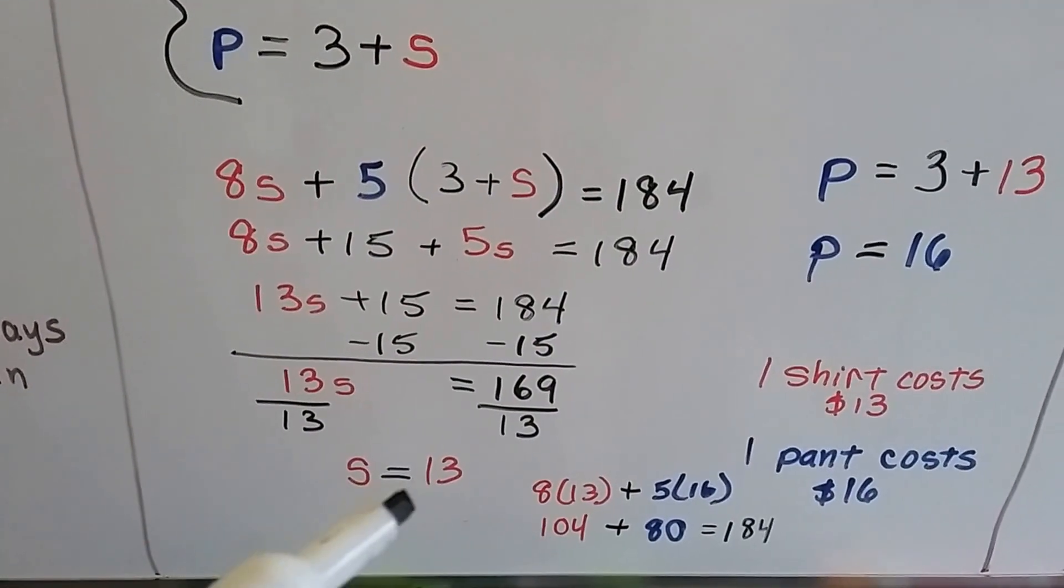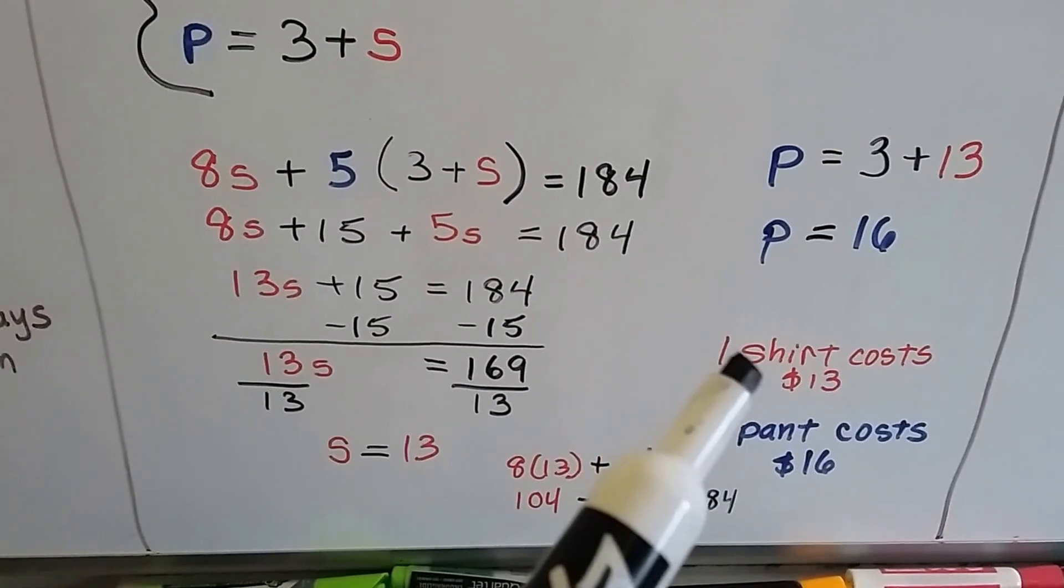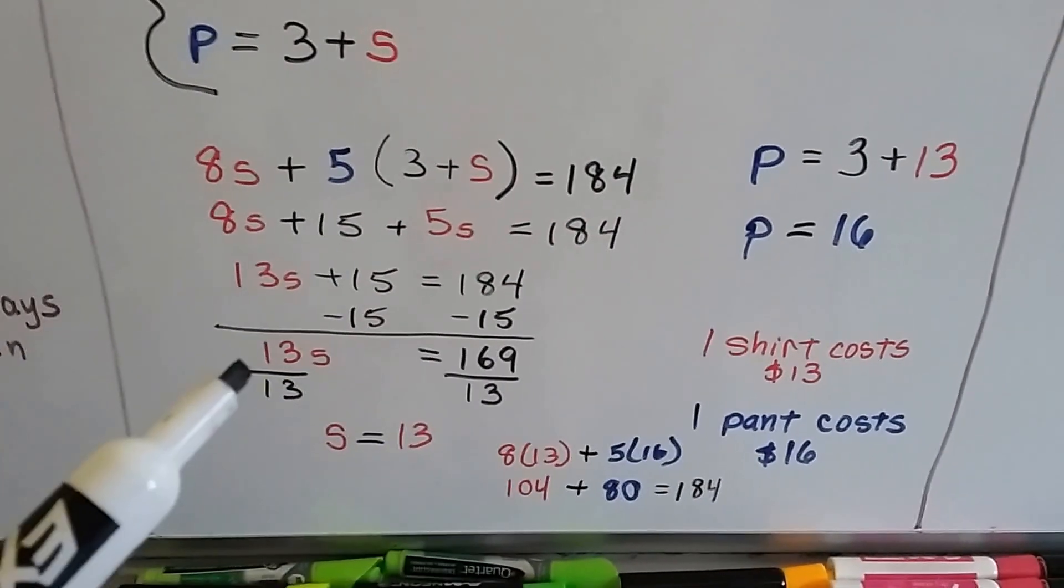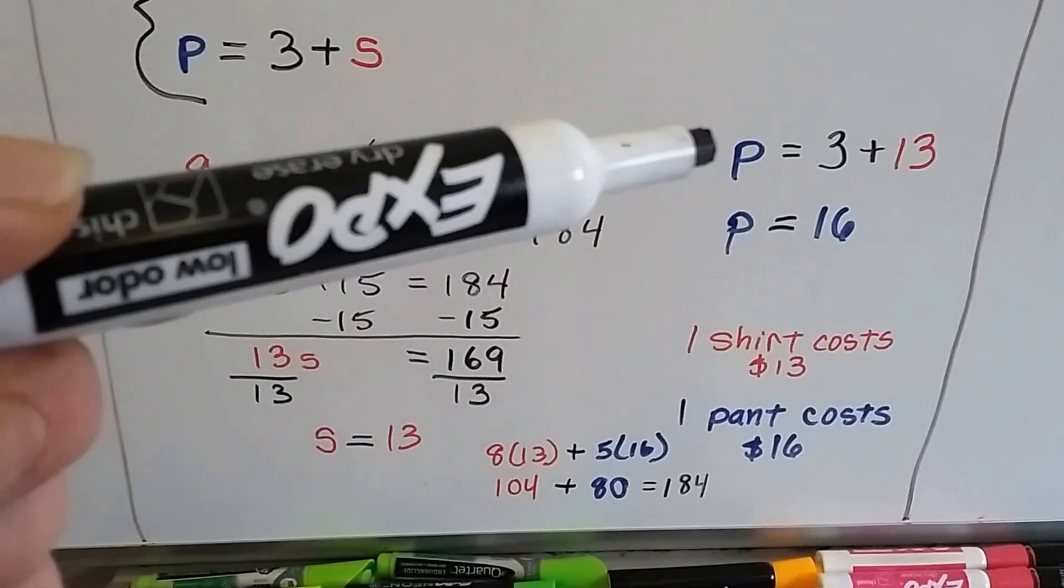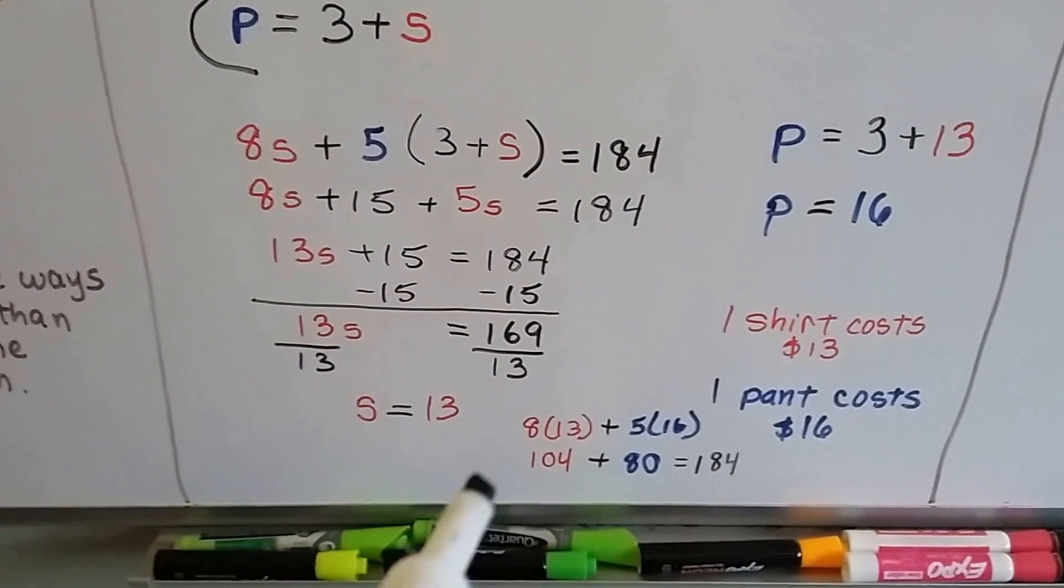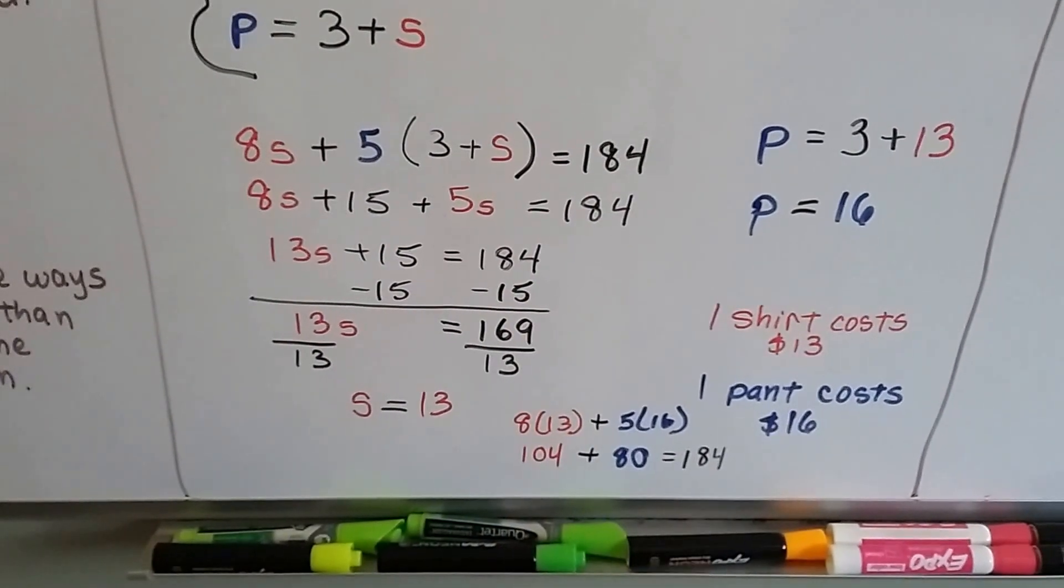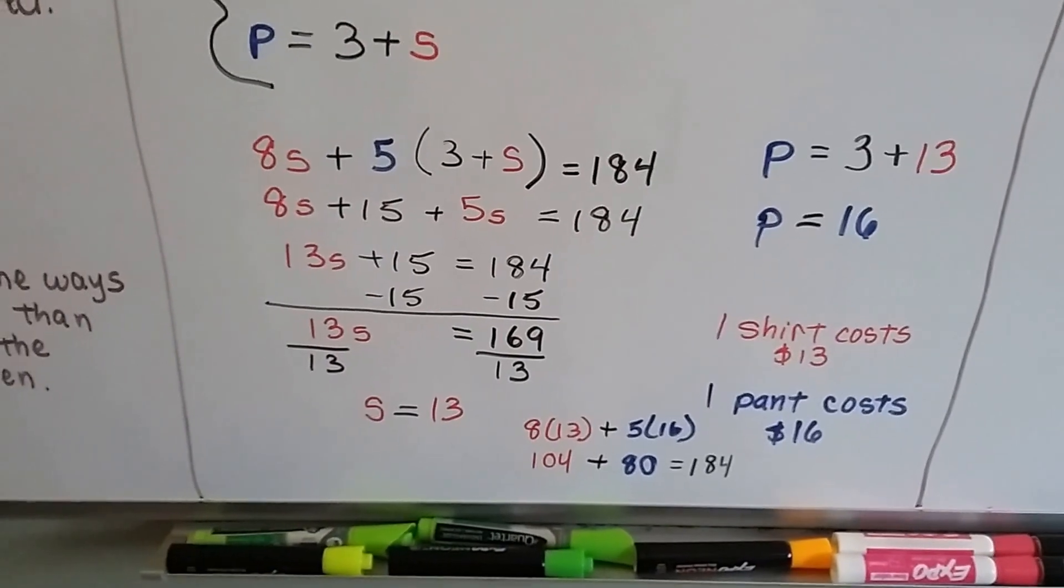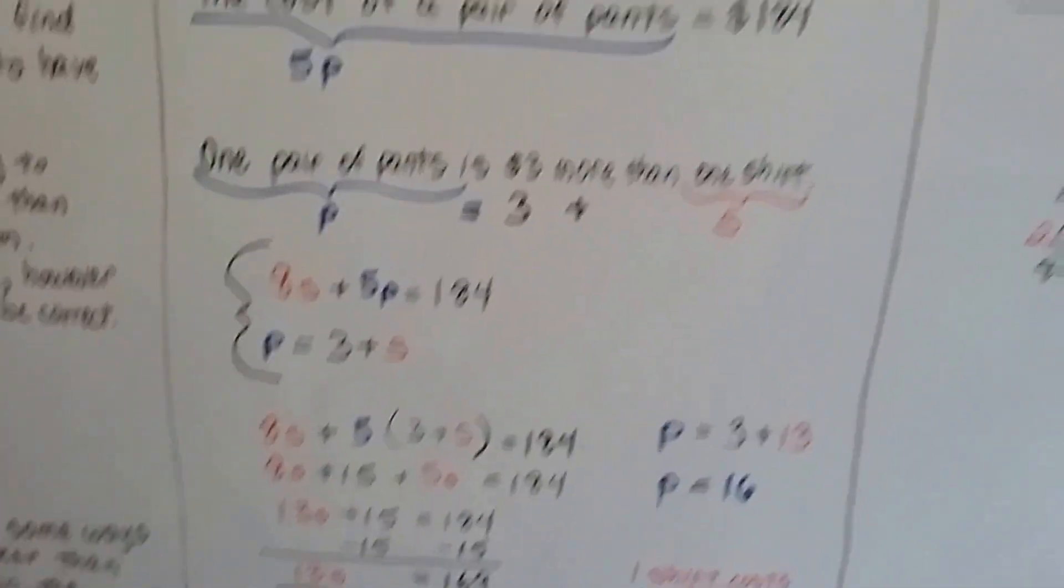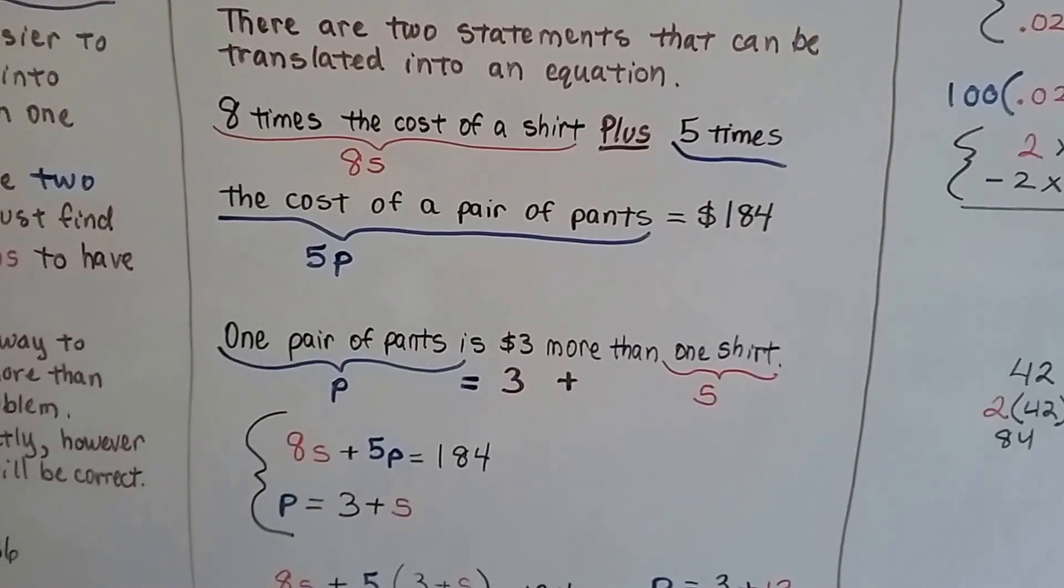We know that one shirt is $13. If the pants is $3 more, the pants was 3 plus 13, we know the pants are $16. We can check this by multiplying 8 times 13 plus 5 times 16 to get 184. See? We can turn the words into equations and turn it into a system of equations.